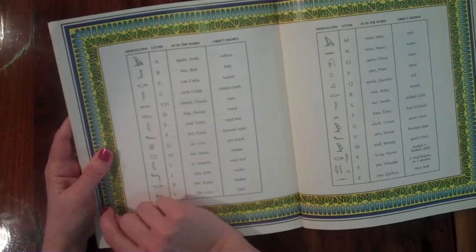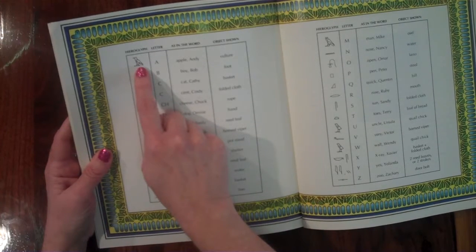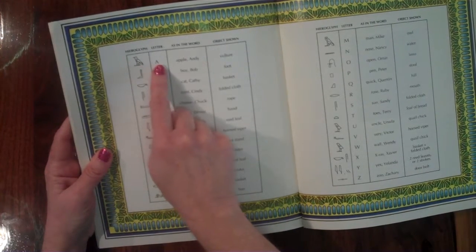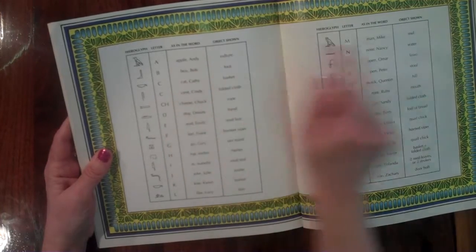So for instance, if my name started with A, then I could use the vulture for A as in apple or Andy, and that's the vulture.